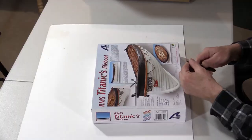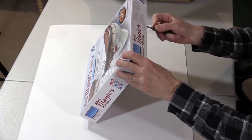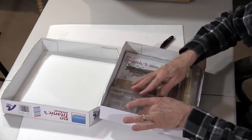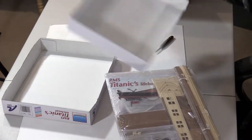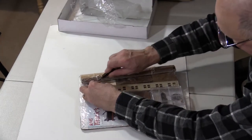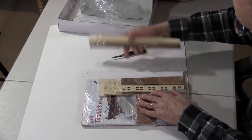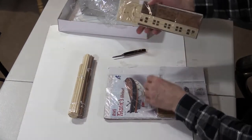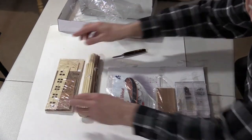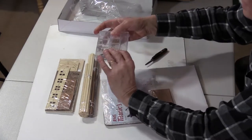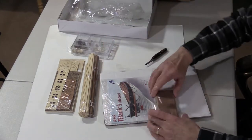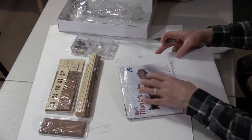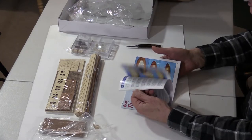And here it is, RMS Titanic lifeboat. It must be the planks, some parts to be cut out, the rigging, this must be the base, and the instructions. 46 pages.